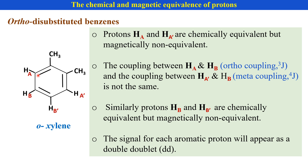But HA proton also couples with HB' proton, and each line of the doublet again splits into two lines — we get the double doublet. Similarly, for the HB proton also we get the double doublet.